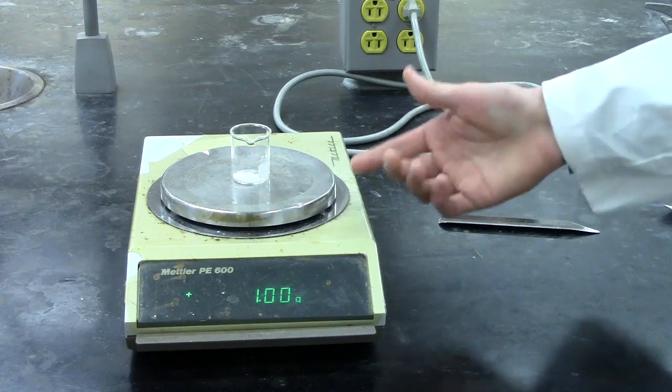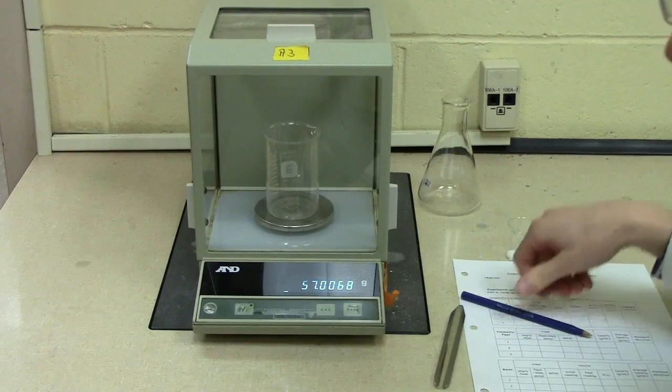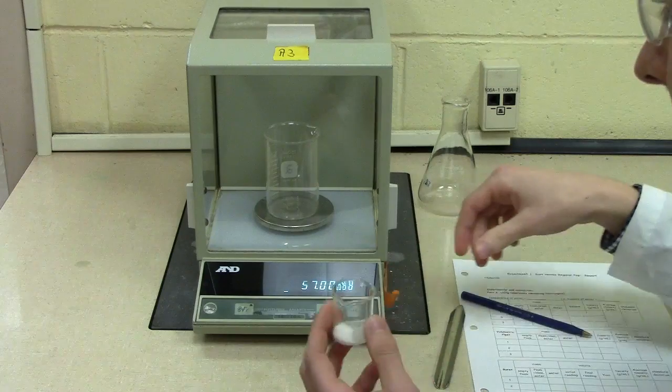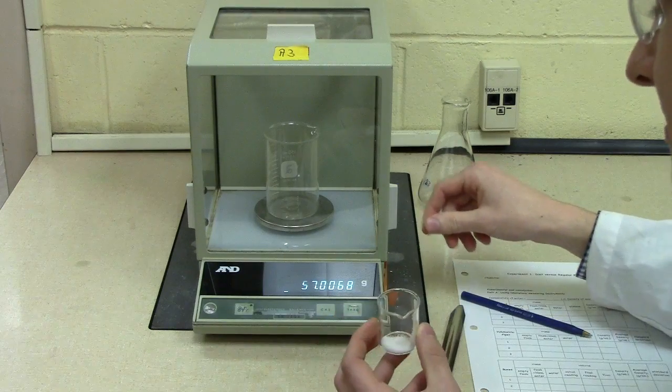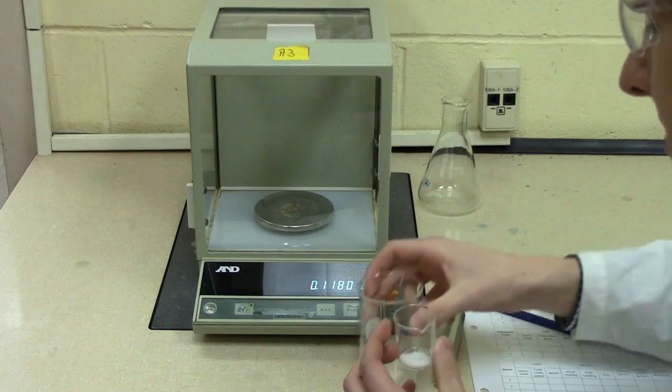In the second step, weigh one gram of your substance using the top loading balance. Step three, once you have weighed out compound from the top loading balance, it can then be loaded into your empty and weighed beaker.